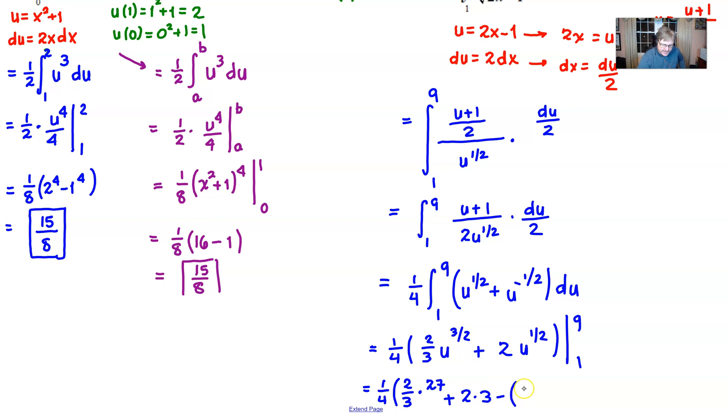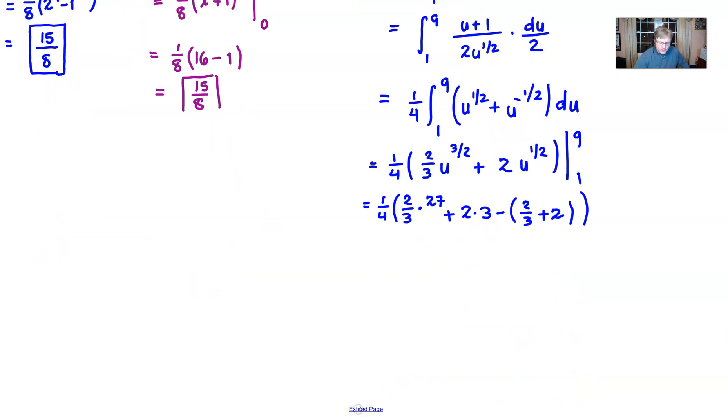Now we're all finished with plugging in 9 now we'll try the same thing with 1. 1 to the 3 halves is just 1 so we just have 2 thirds times 1 plus 2 times the square root of 1 is just 2 and I suppose we ought to go one more step and really clean this thing up in case this is a multiple choice problem 2 thirds times 27 is the same thing as 2 times 9 when we do a little reducing there so that would be an 18 plus a 6 minus but boy we weren't so lucky because we're going to get a fraction here 2 thirds plus 2 or 2 thirds plus 6 thirds would be the same as 8 thirds.